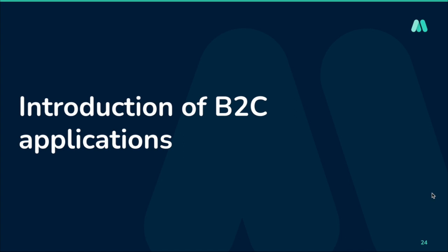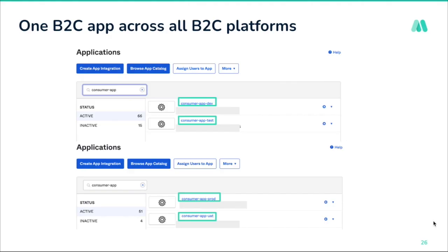Moving on, we started developing B2C applications. To summarize what we've learned so far: one app per environment, application profile over default profile, and specific entity-based scopes with granular read, write, and delete access. For B2C, we created one app per environment but made it common across all B2C platforms. The reason is that user details — like phone number, address, email, or patient ID — are the same across platforms, so it made sense to have one application profile per user per environment.